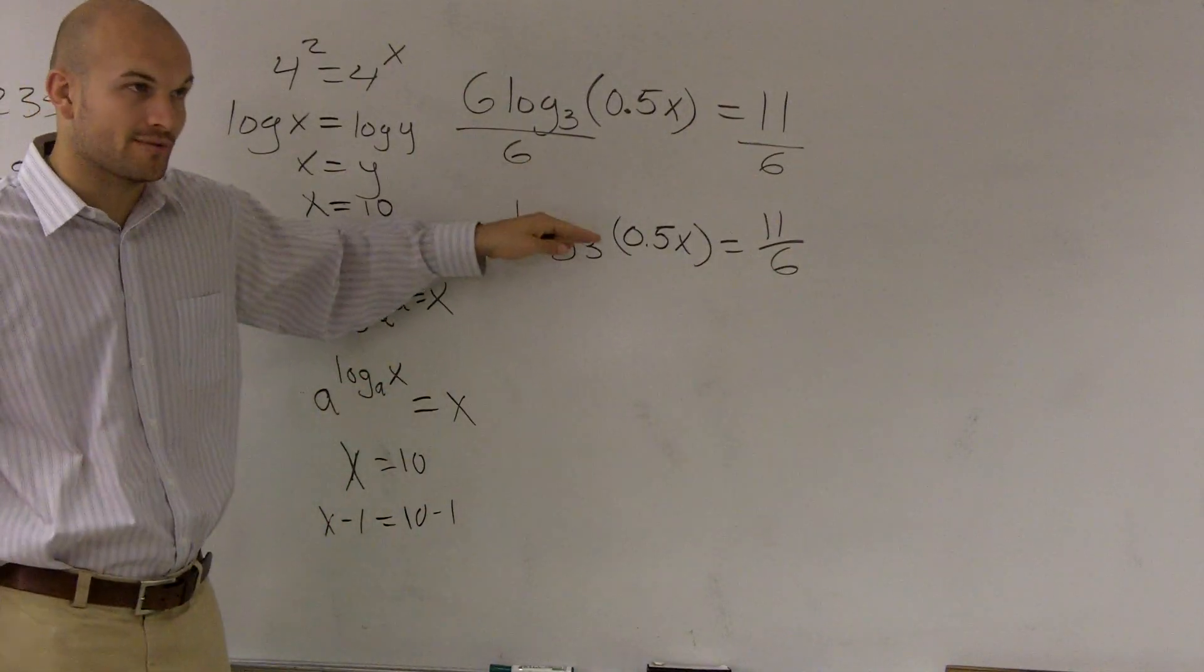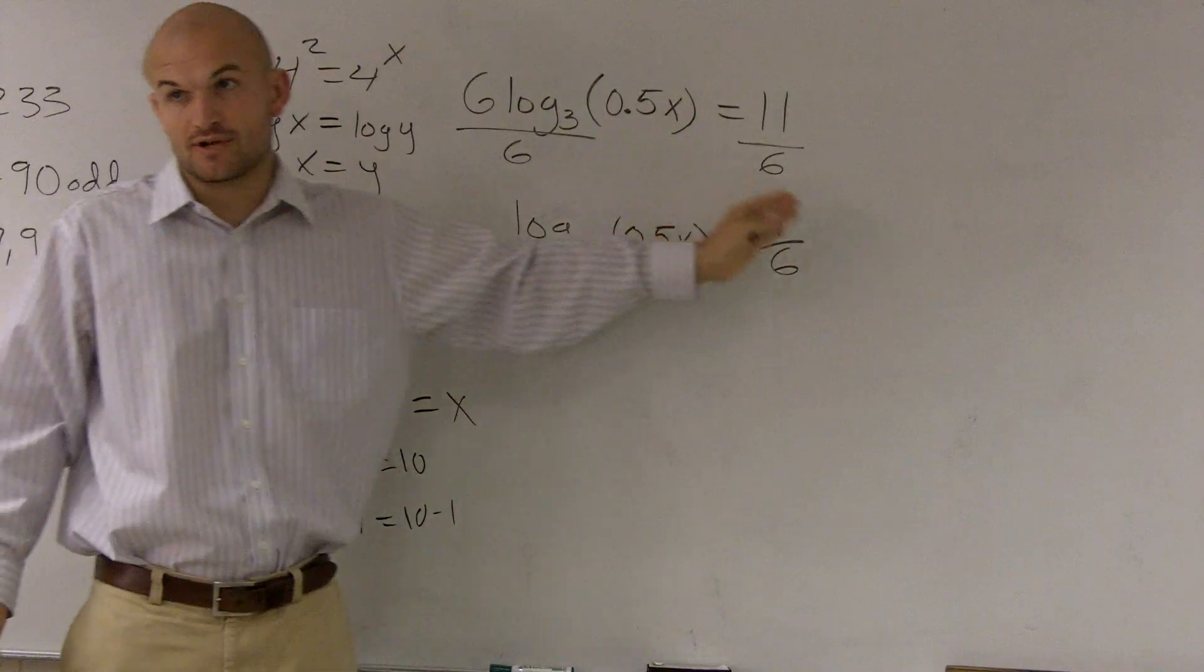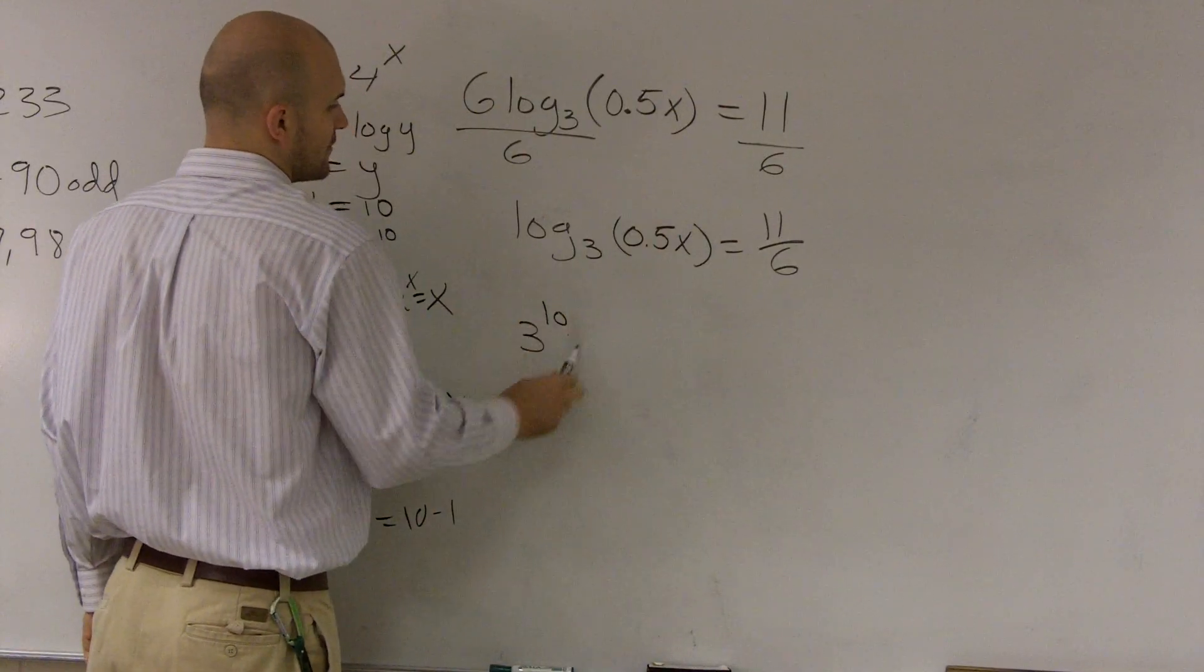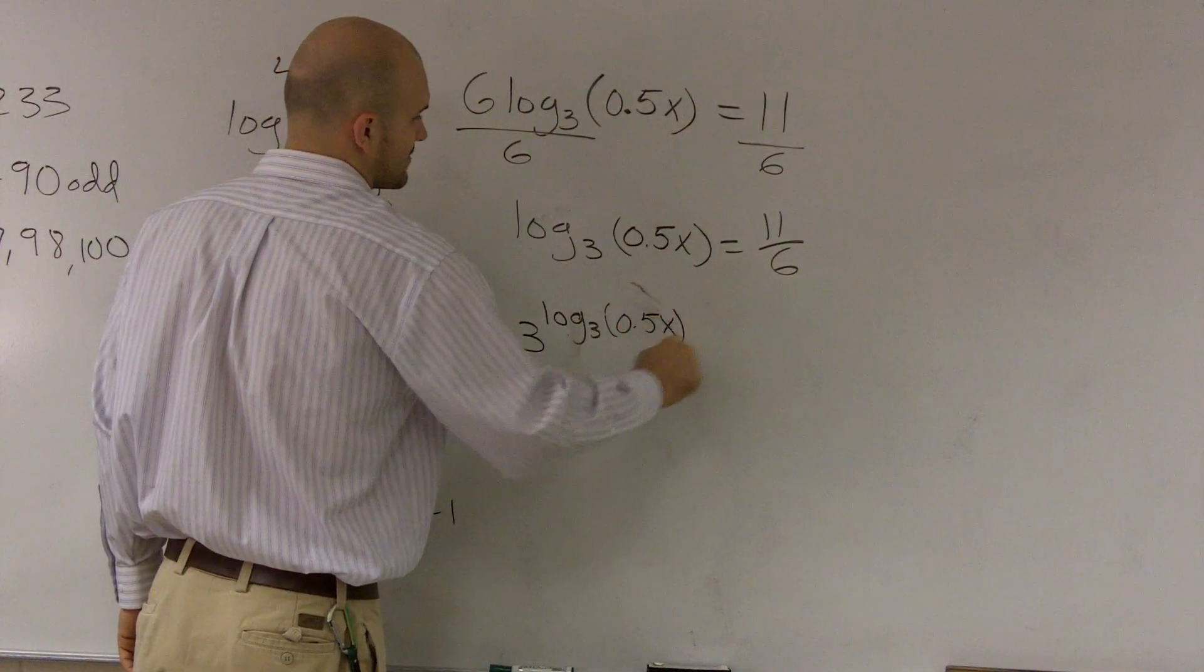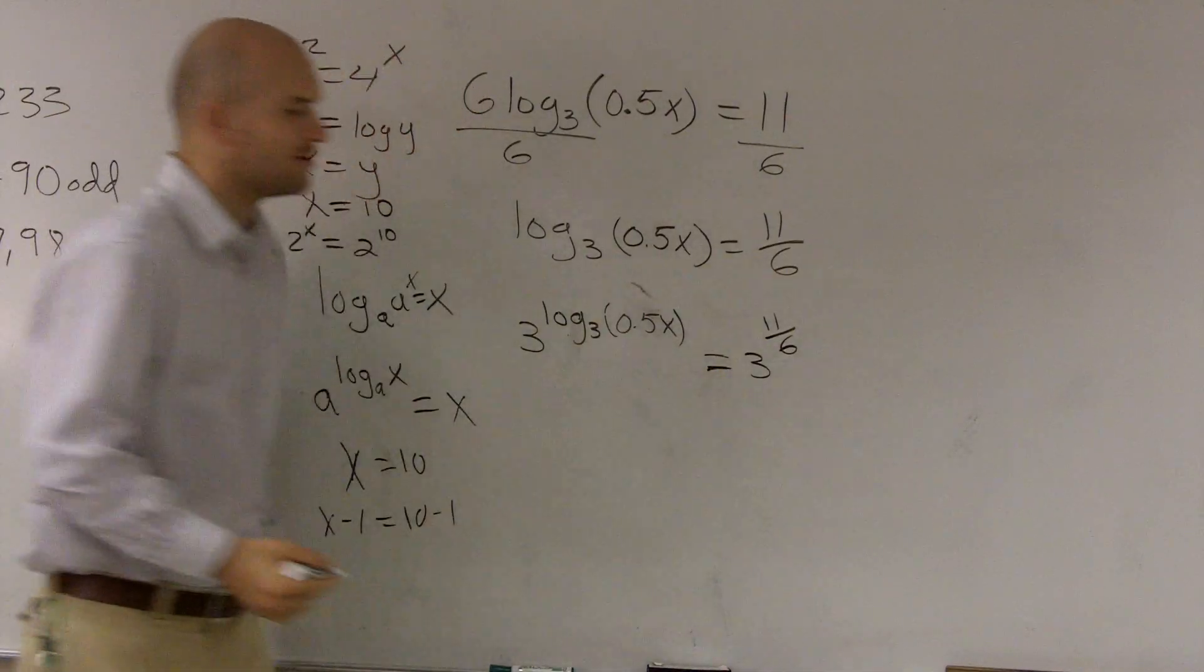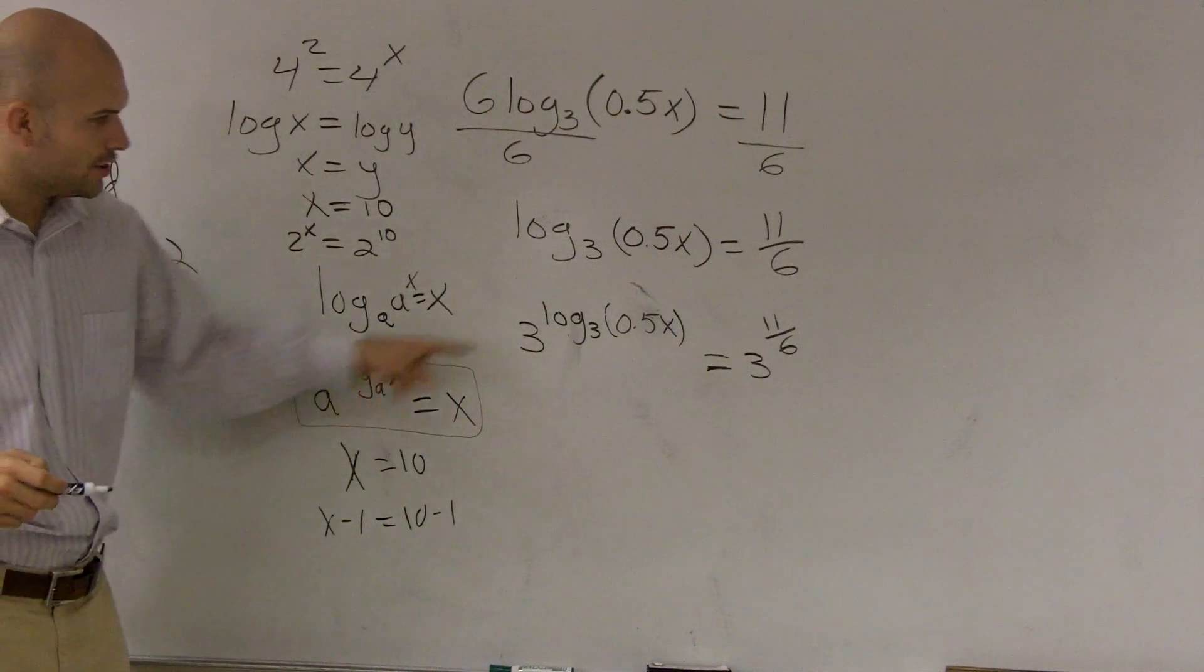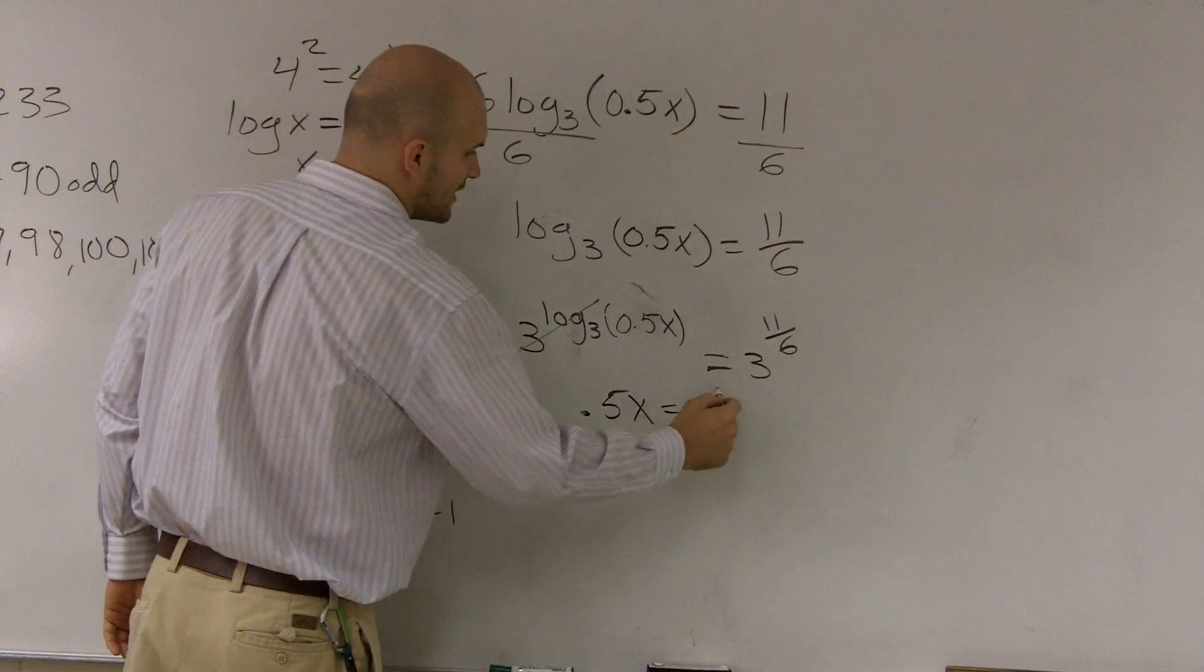So what I'm looking at here is I have a logarithm. I need to get rid of this logarithm. There's two ways I could get rid of the logarithm. One, I could transfer it to exponential form. This is logarithmic form. I could transfer it to exponential form. That is one way. The other way you could do it is you could also say, well, what happens if I raised both of these to the base of 3. So 3 raised to log base 3 of 0.5x equals 3 raised to 11 over 6. And the reason why I'd want to raise both of these as exponents with the base 3 is because now using my properties of logarithms, I know this is now just going to equal, that's just going to cancel out, so I'm left with 0.5x equals 3 to 11 over 6.